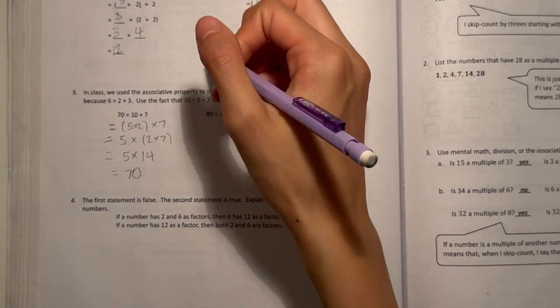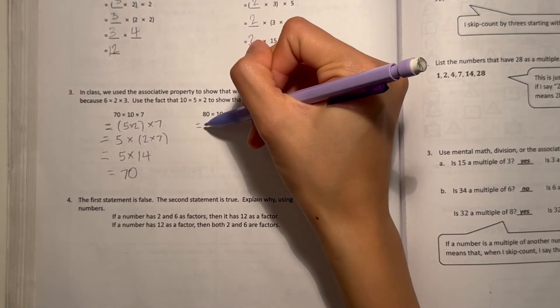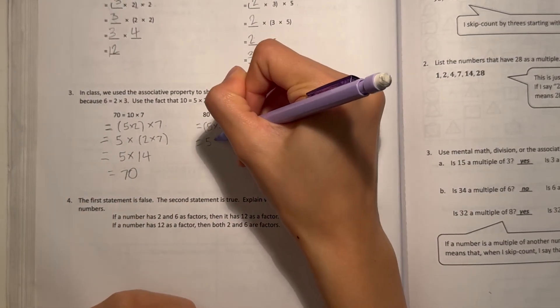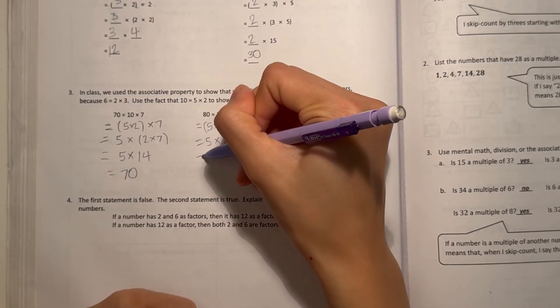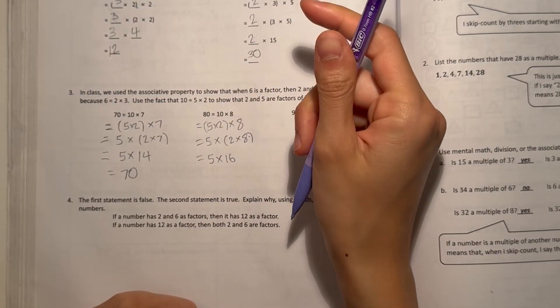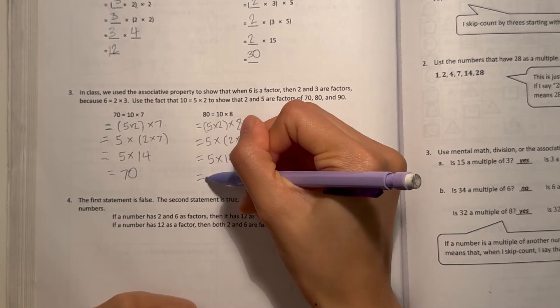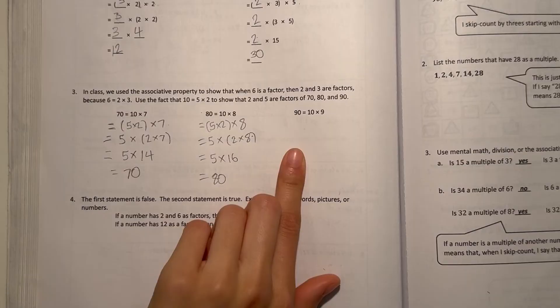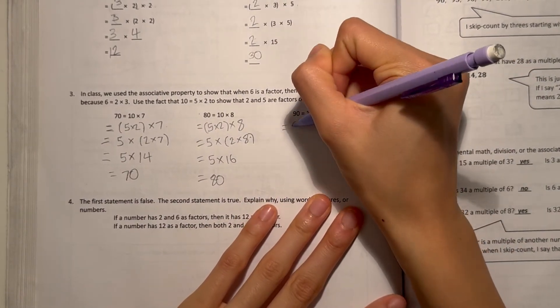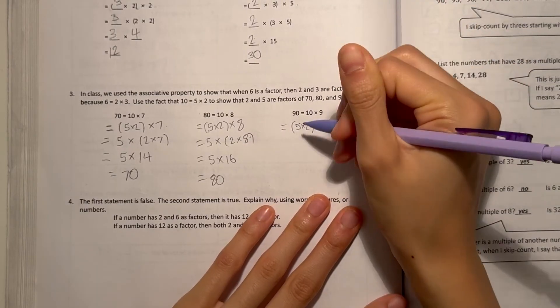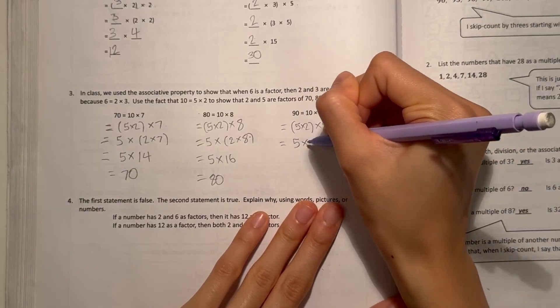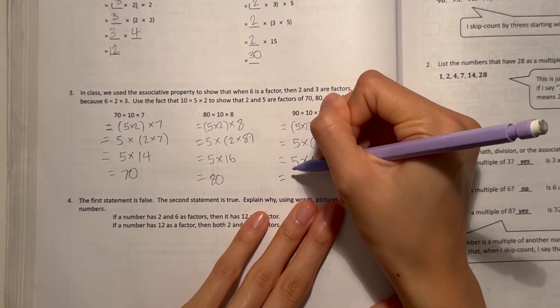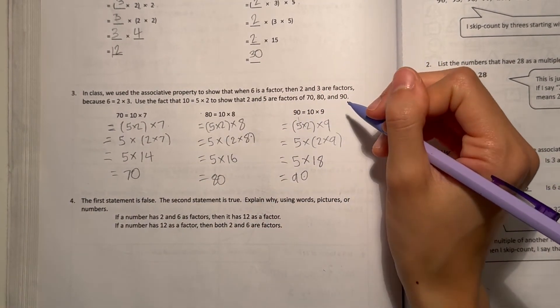80 equals 10 times 8. That's equal to 10, let's break apart 10. That's 5 times 2 times 8. Now, we move the parentheses over. That's 5 times 2 times 8, which will give us 5 times, 2 times 8 is 16. So we do that 5 times 16, that's 80. So our answers match up, which means 5 and 2 are also factors. 90 equals 10 times 9. That is, 10 is 5 times 2, and then times 9. Equals, move the parentheses over, 5 times 2 times 9. That's 5 times, 2 times 9 is 18. So 5 times 18, which is 90. The numbers match up, which means 5 and 2 are also factors.